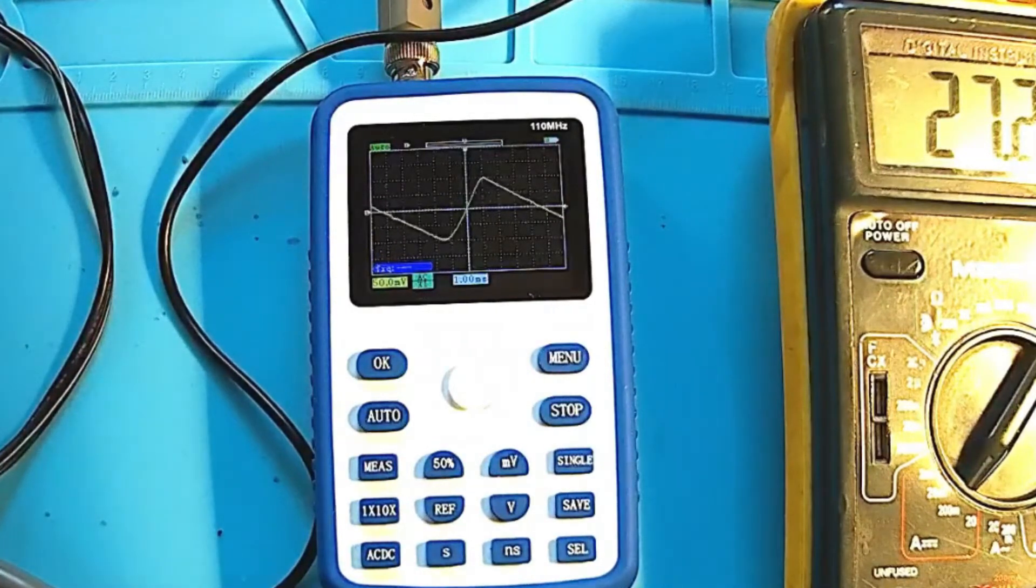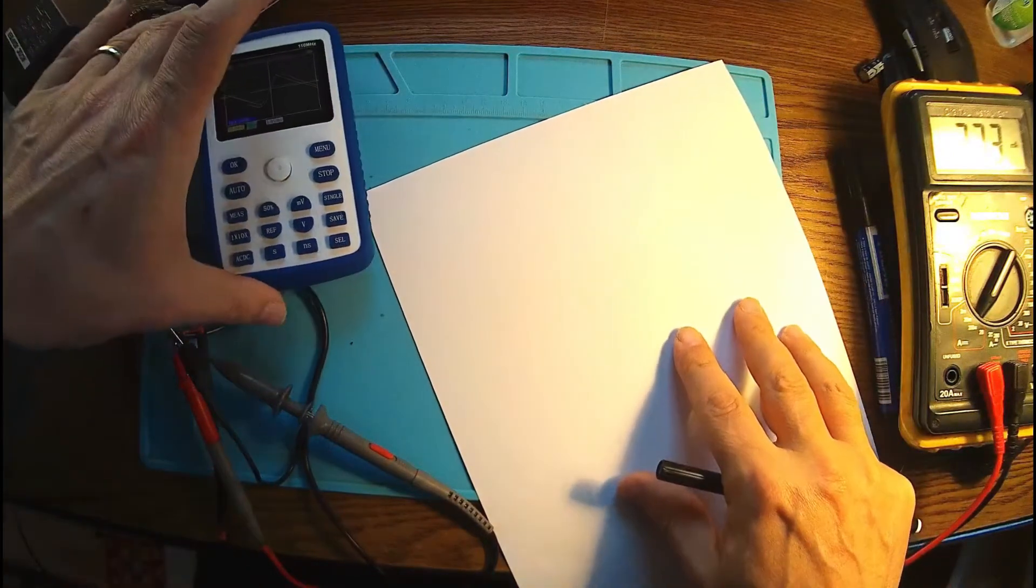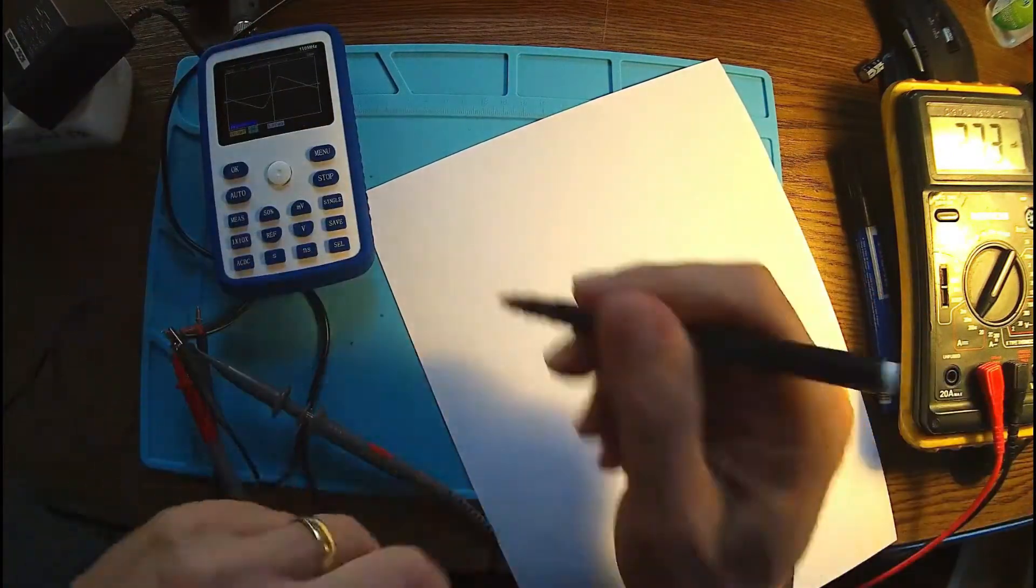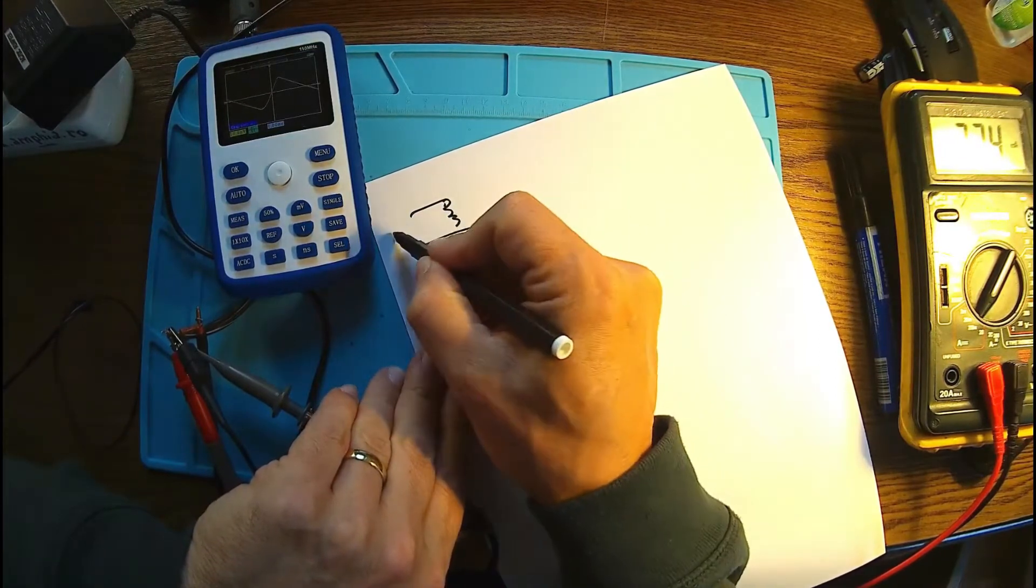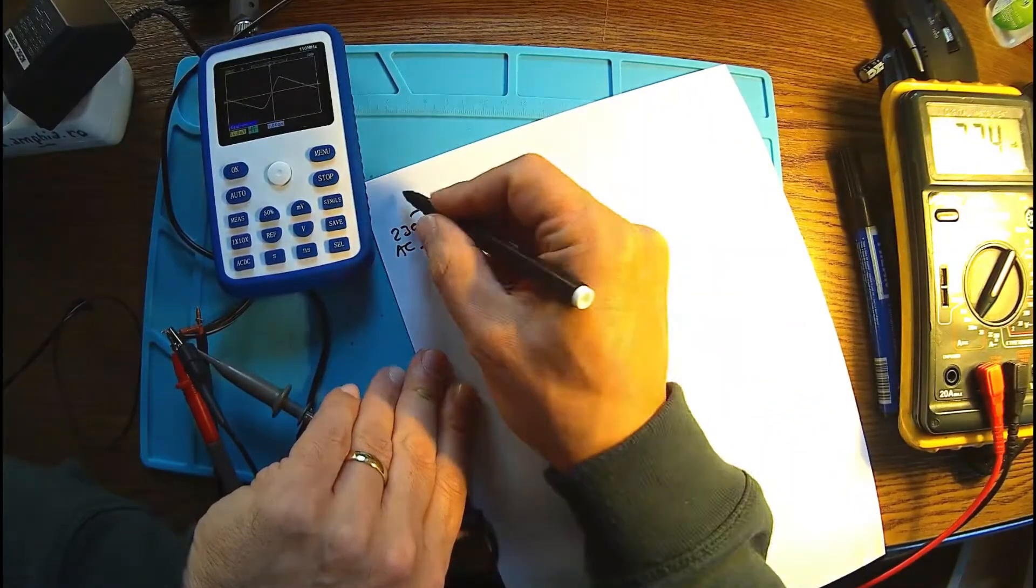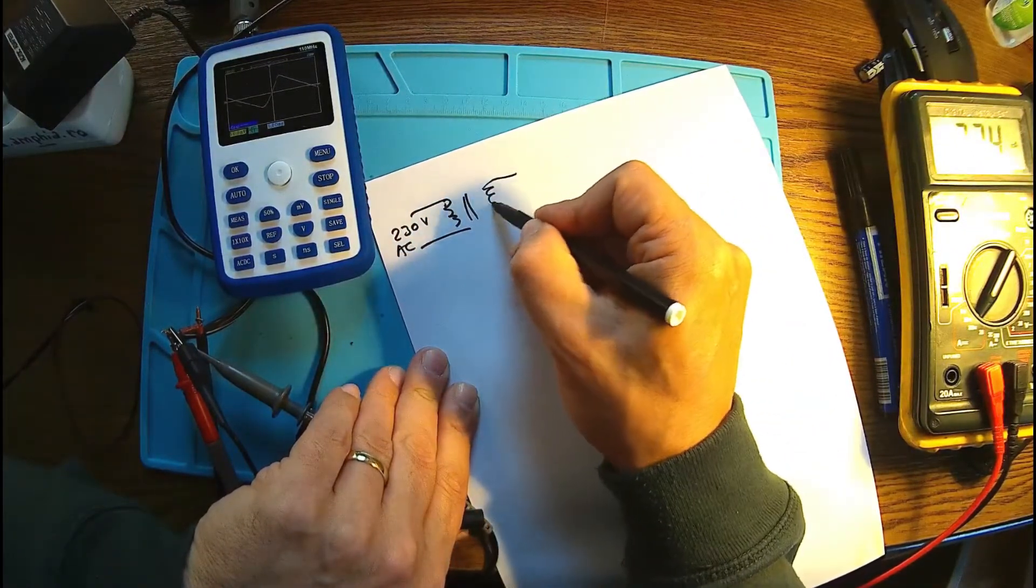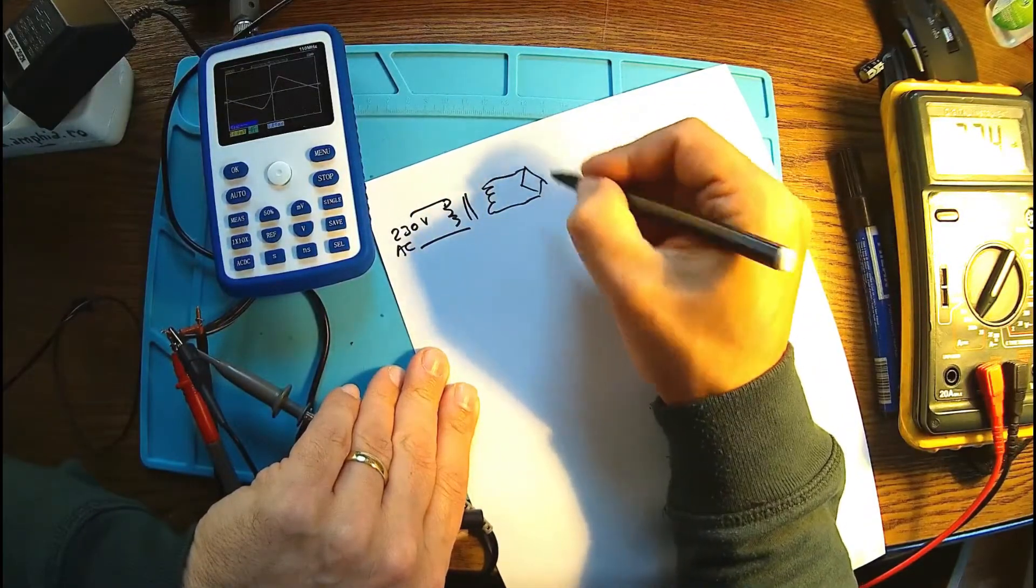Let me show you what I have done here. We have a transformer like this. That's 230 volts AC, that's the primary, and this is the secondary.